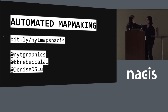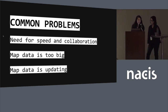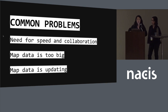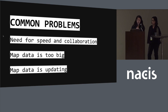Some of the common problems we face because we work at a news organization: we need to get things done quickly and collaborate with others. Sometimes the map data is too big, and opening it in QGIS or ArcGIS would be really slow and even crash. Other times the map data is updating — for example with hurricanes or wildfires or other developing stories.